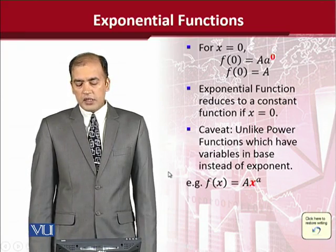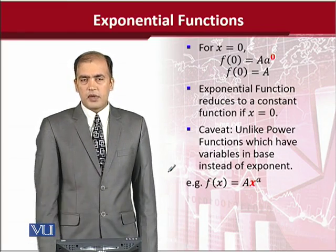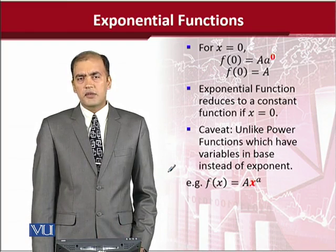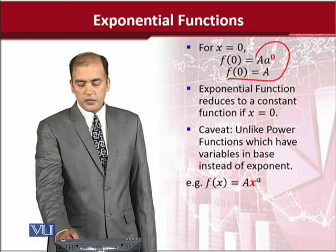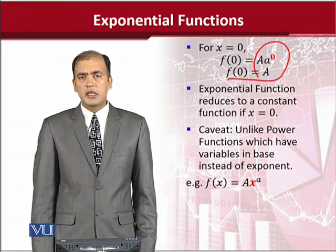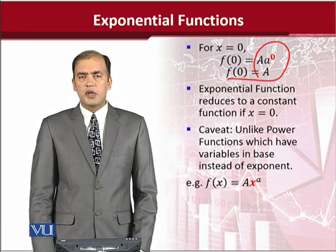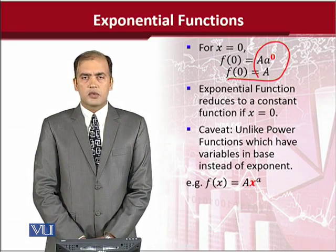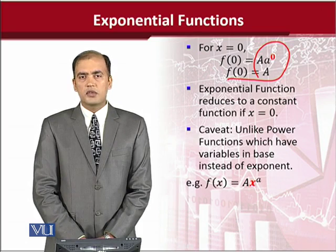Now we are assuming that x is equal to 0. When we put this value in place of x in the standard form, the answer is 'a', and we remember that 'a' is a constant value. So an exponential function can reduce to a constant function when x is equal to 0.